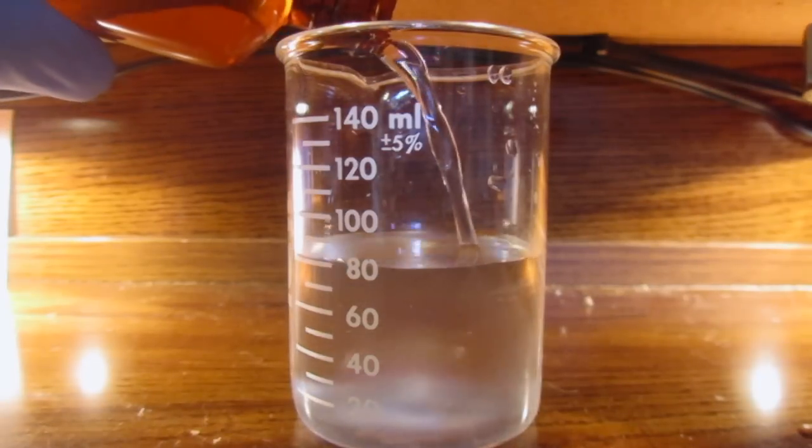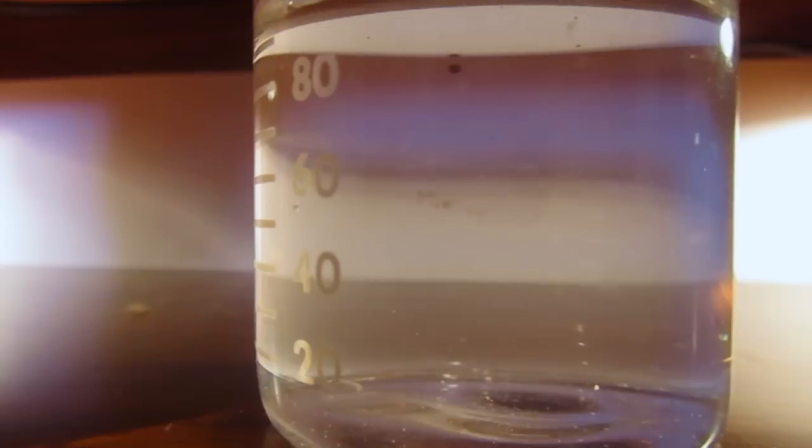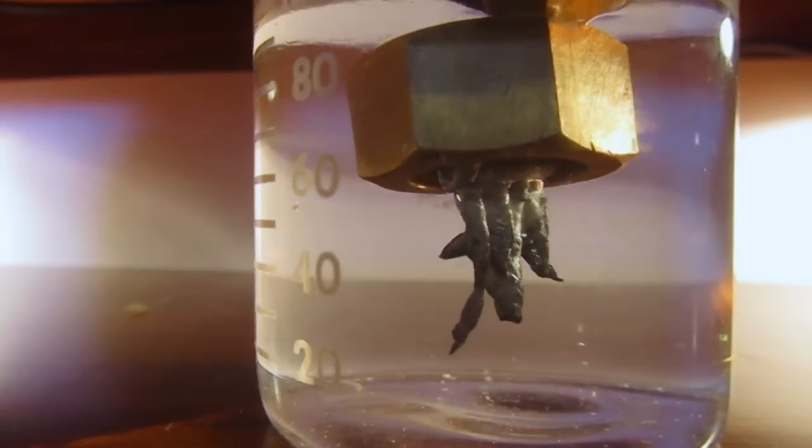To make this solution, I dissolved 10 grams of lead acetate in 100 milliliters of water. To this I added a small amount of zinc that I melted along with a brass nut, because brass contains some zinc.